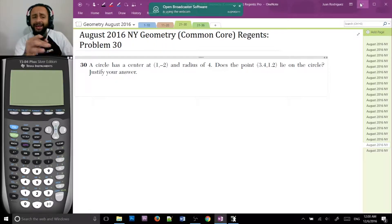A circle has a center at 1, -2 and radius of 4. Does the point 3.4, 1.2 lie on the circle? Justify your answer.